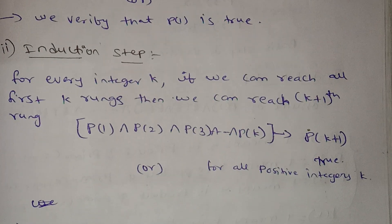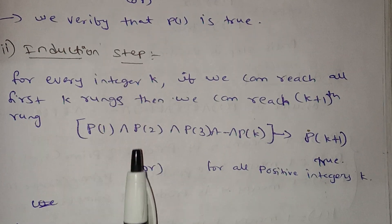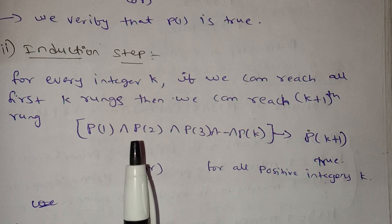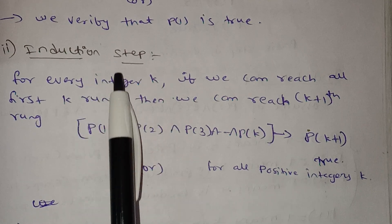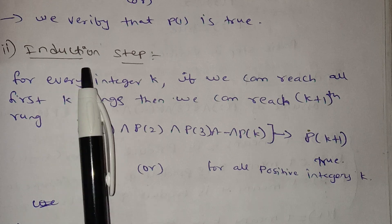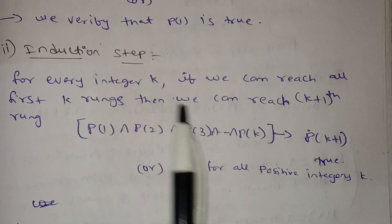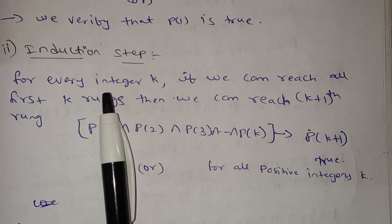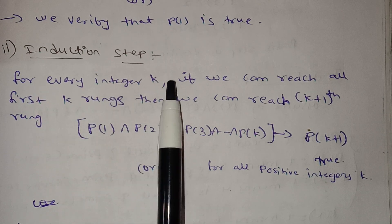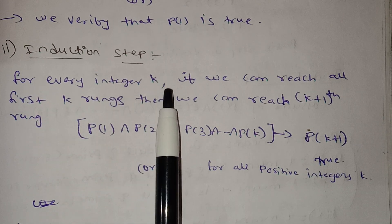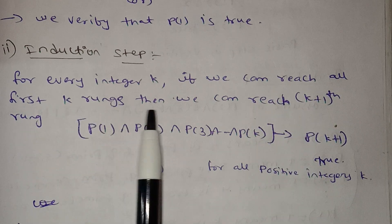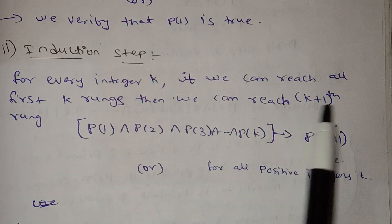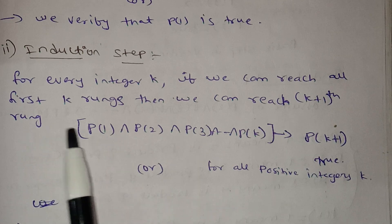Next is the induction step — the strong induction step, which is the second step. For the induction hypothesis, for every integer k, if we can reach all first k rungs, then we can reach the k+1 rung.